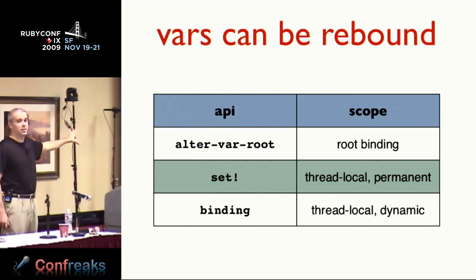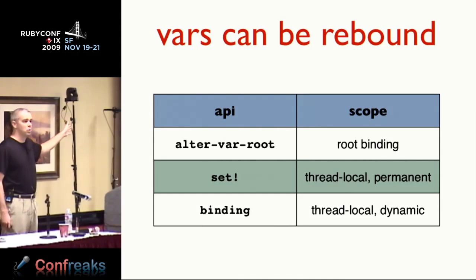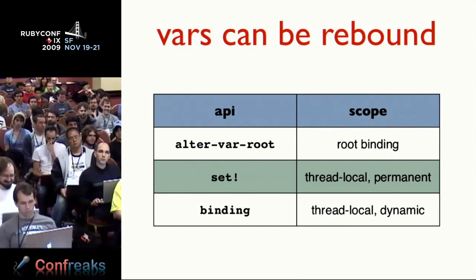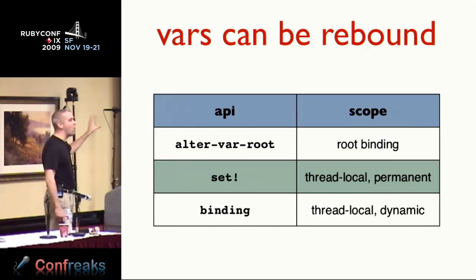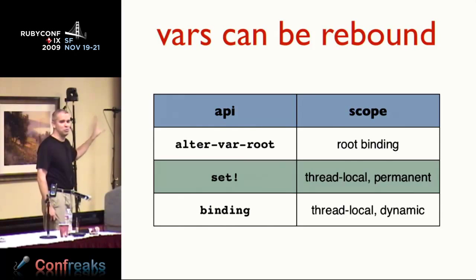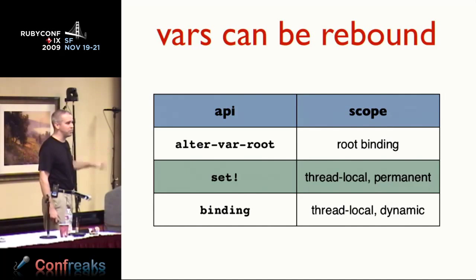Like Ruby, Clojure is a mutual-consenting-adults kind of language. There are powerful constructs — if you need to do this, you know what you're doing. Don't come whining when you break your lazy code because you rebound stuff. We're not going to build in protection for that kind of thing.